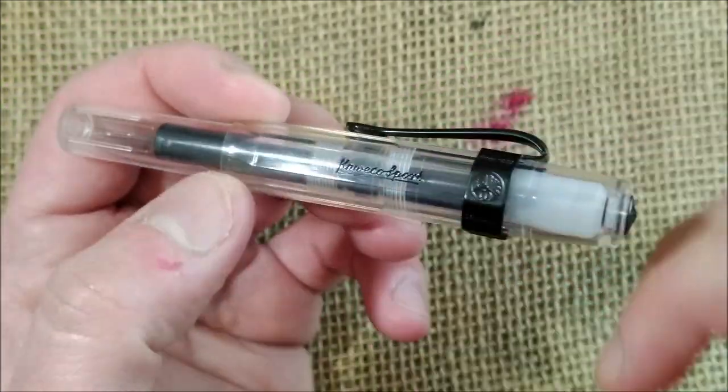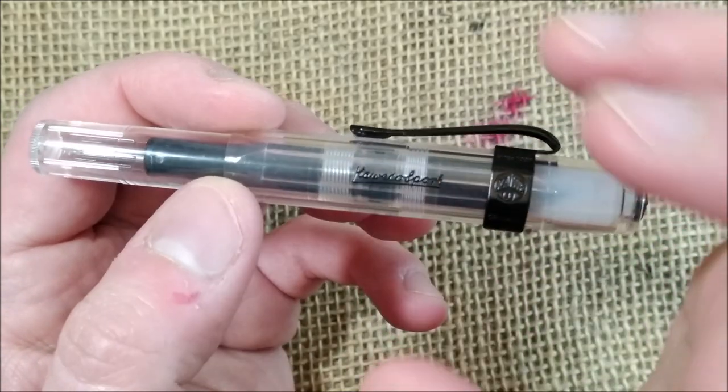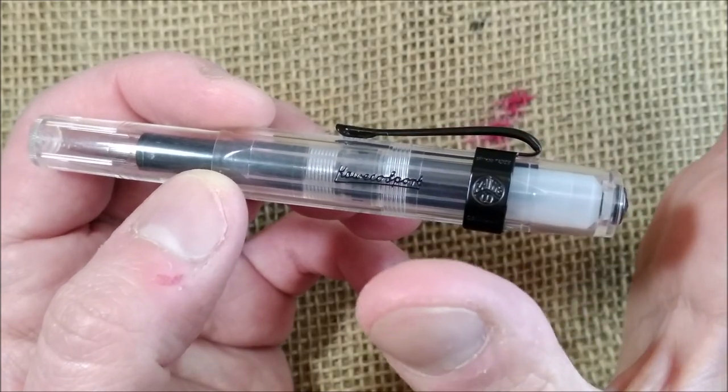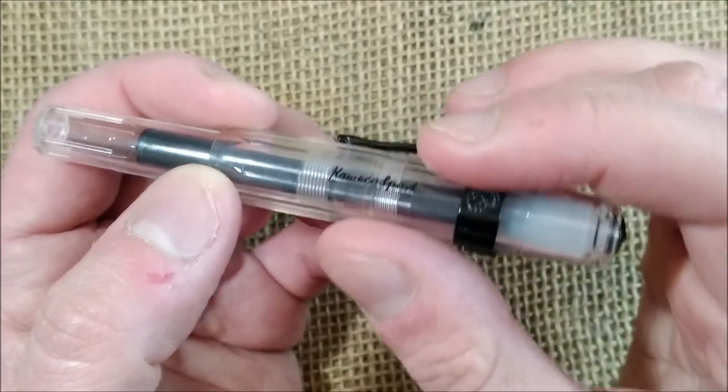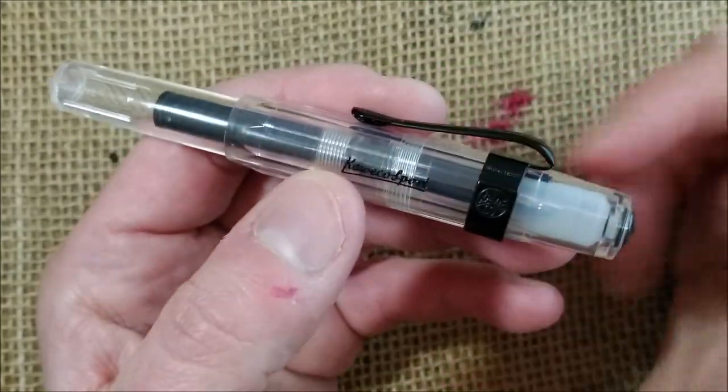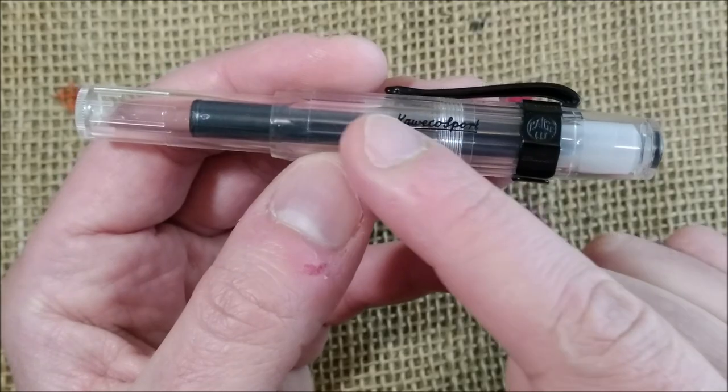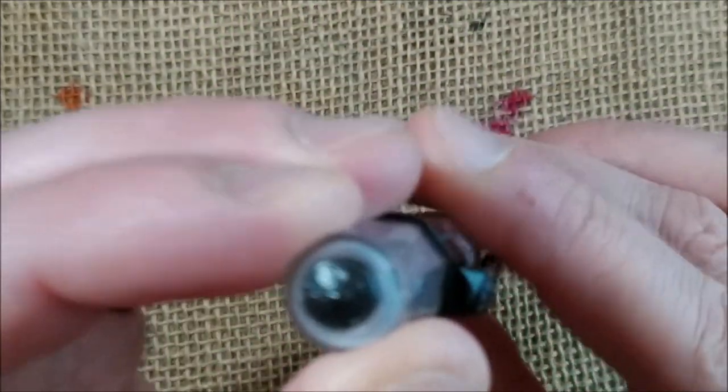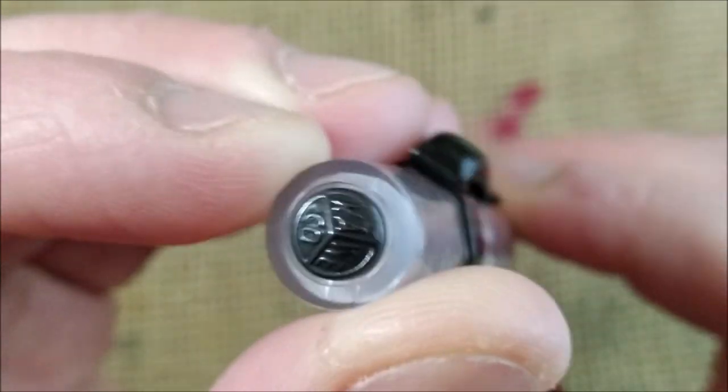Let's take a look at the pen itself. The pen is a clear demonstrator Kaweco pen, Kaweco Sport. You have seen, I hope, many of my videos about Kaweco Sport. So it means they are pens with a medallion with Kaweco logo on top of the cap. In this case it is black.